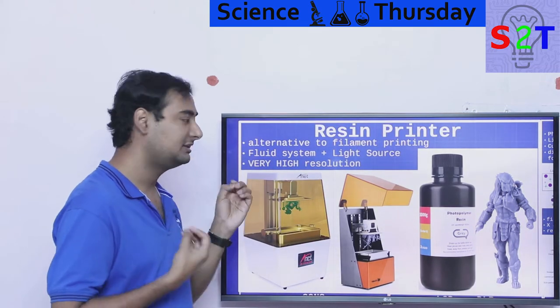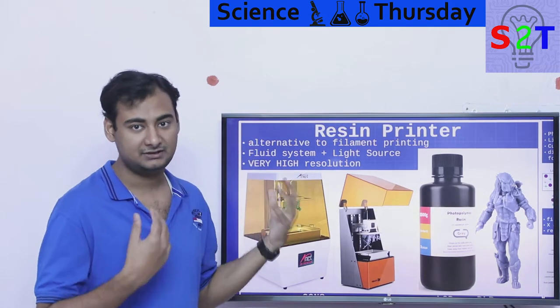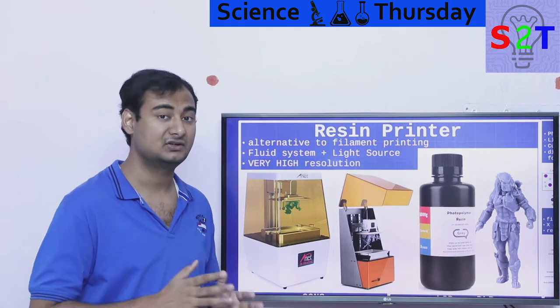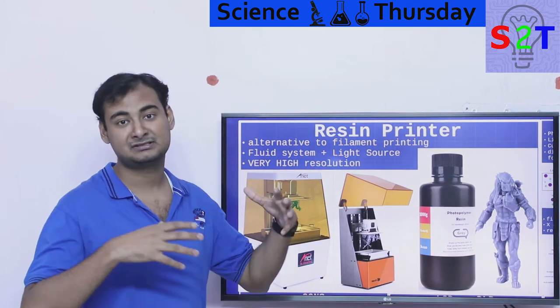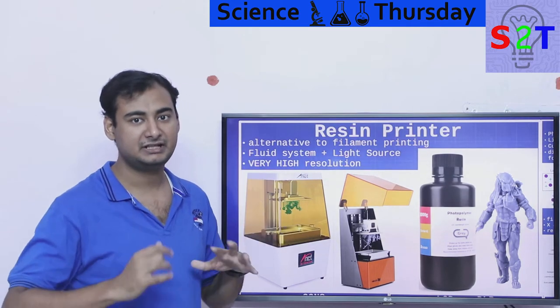Now resin printer is basically an alternative to filament printing. Filament printing is very good for what it does, however it does lack one serious thing: it does not have the resolution. Basically if you're making something big, okay no problem, like if you're making Iron Man helmet you can 3D print it and then polish it, sand it, whatever you have to do.